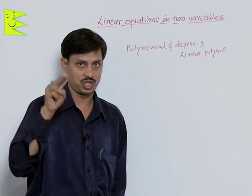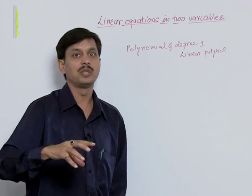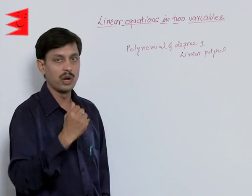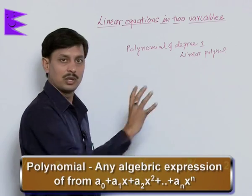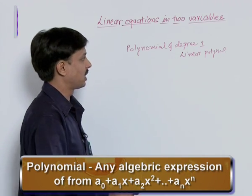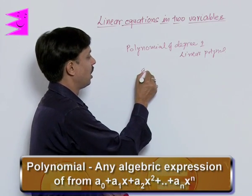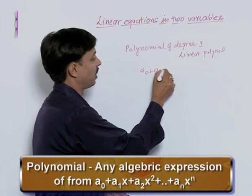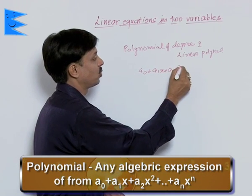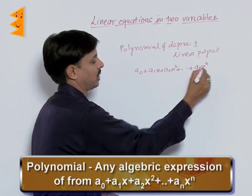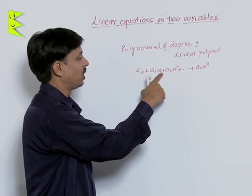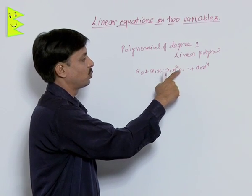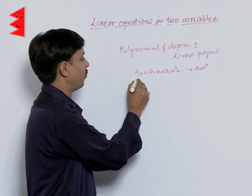I want to tell you the standard form of the linear equation in one variable and how it comes. Polynomial, you know, any algebraic expression of the form A0 plus A1x plus A2x square plus dot dot dot plus Anx^n.